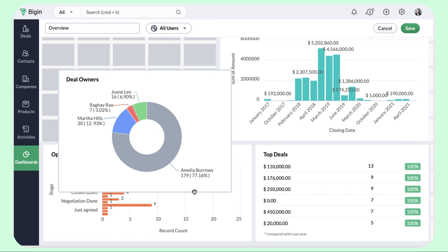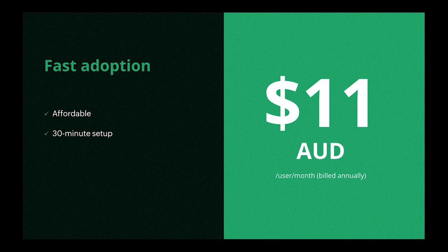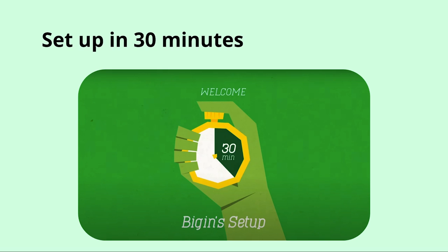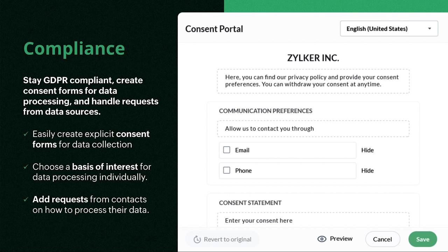Compared to other CRMs on the market, Begin is also very affordable for small businesses, starting at $11 per month per user when billed annually. Like many of our products at Zoho, Begin also offers a forever free plan if you're a single user — you don't even need to enter your credit card information. And it can be set up in just 30 minutes. Because of the core functionality with no fluff, Begin can be set up and implemented for your team in no time. Watch our YouTube video linked below to see how you can set up Begin in under 30 minutes.